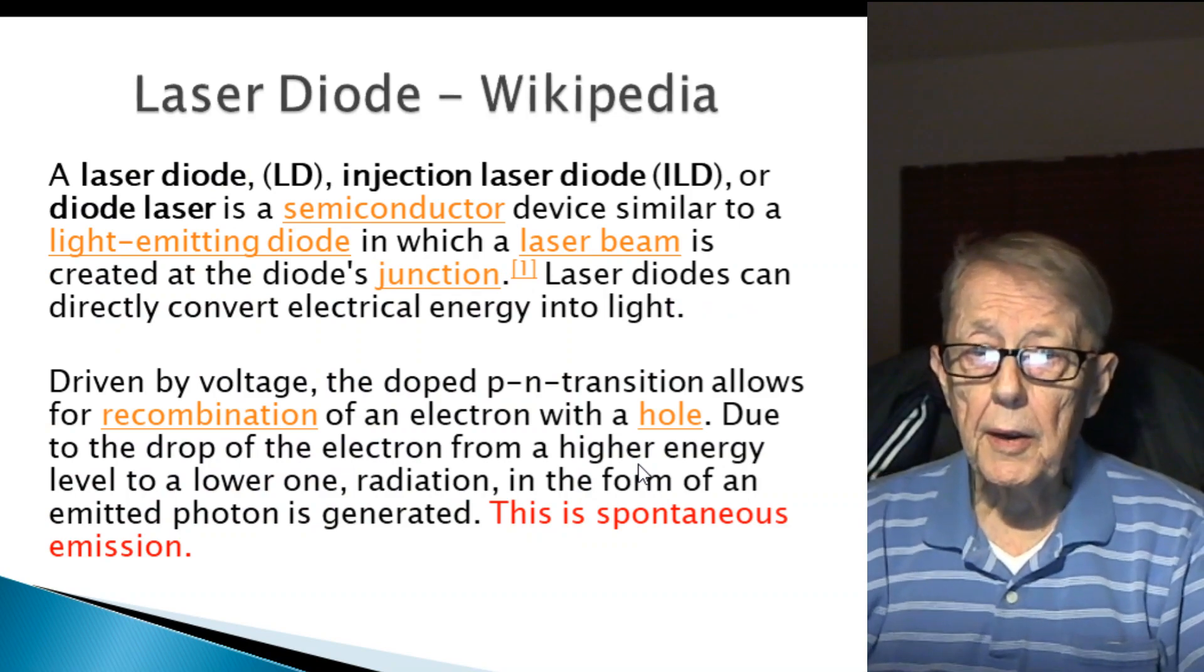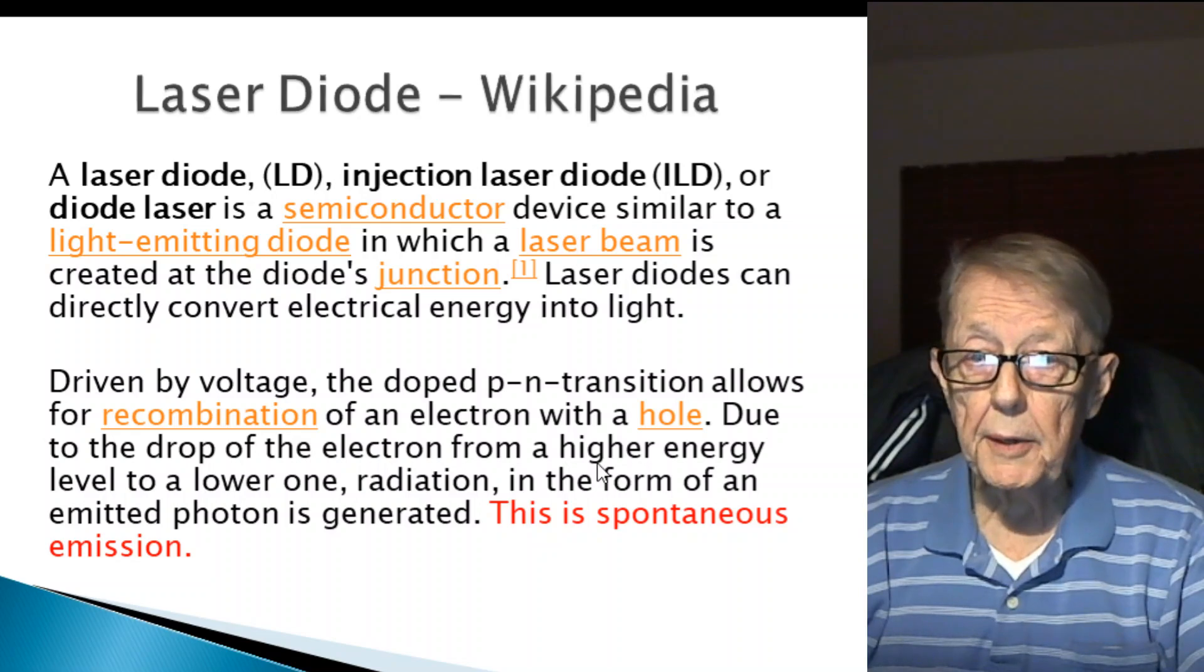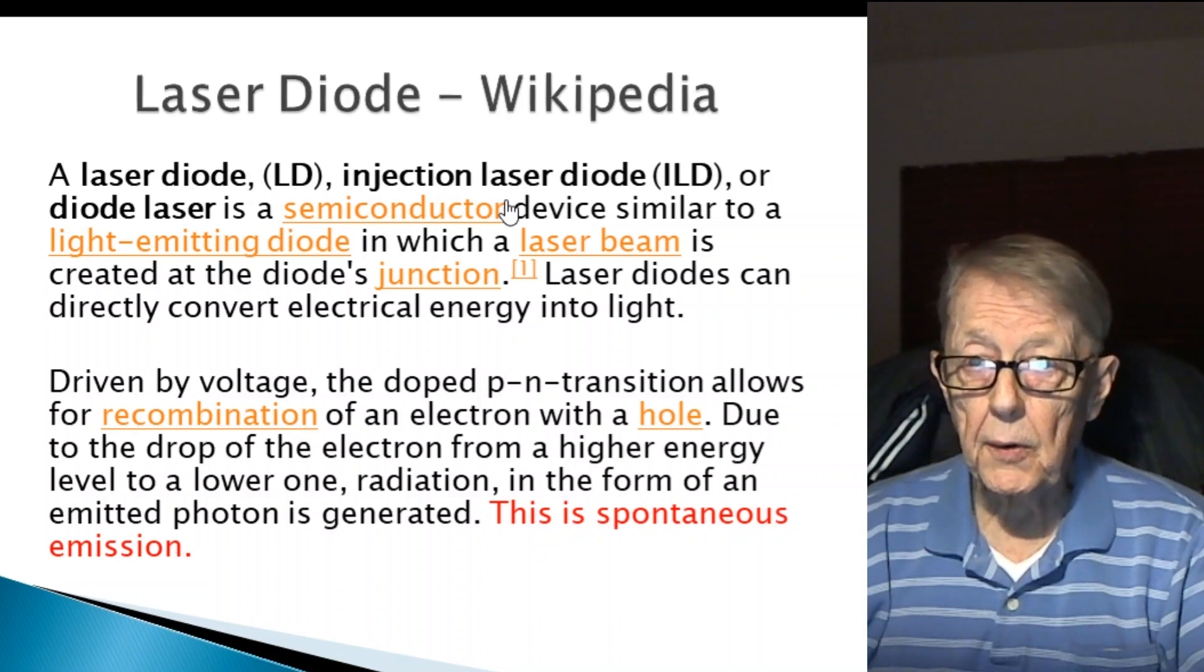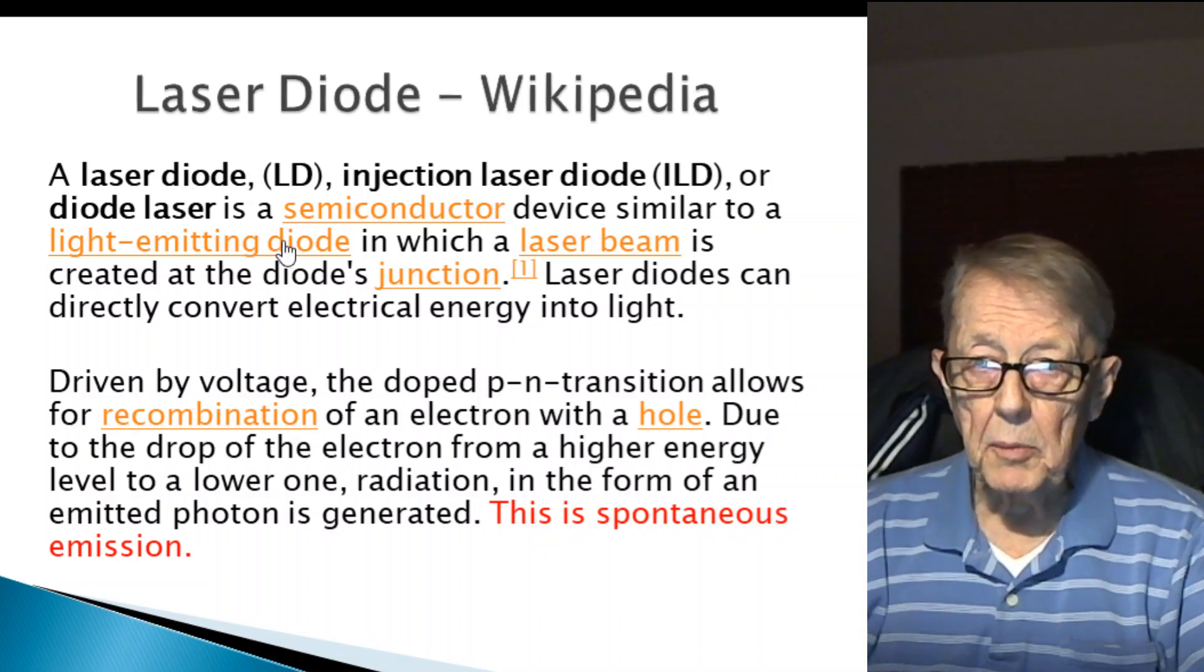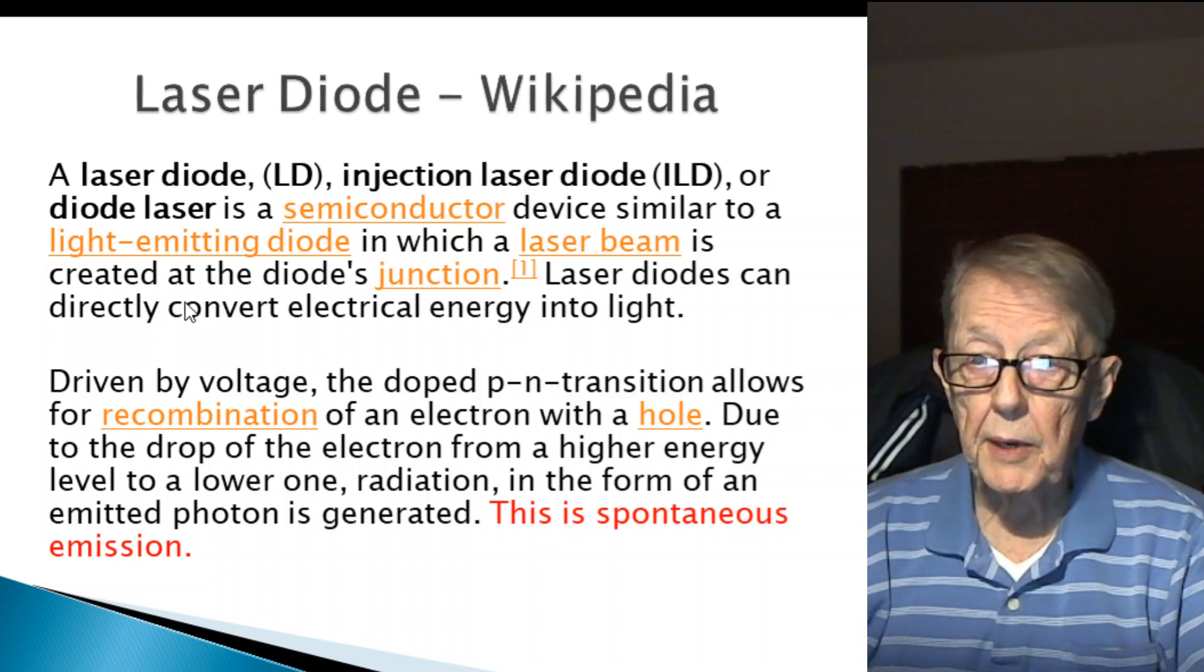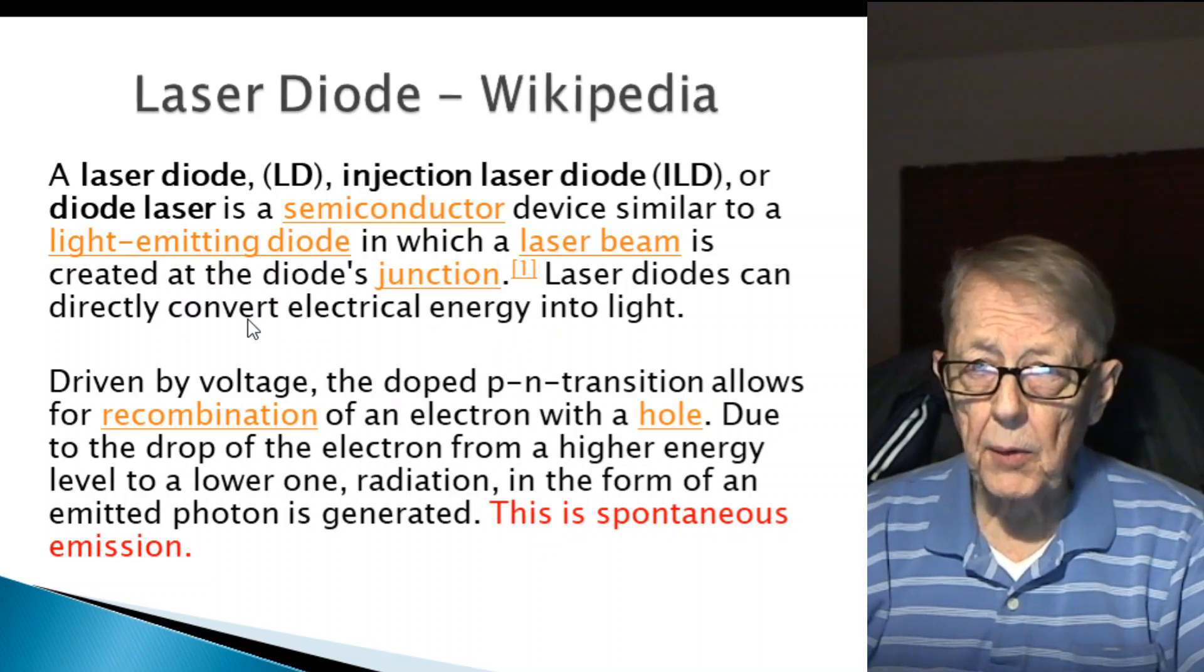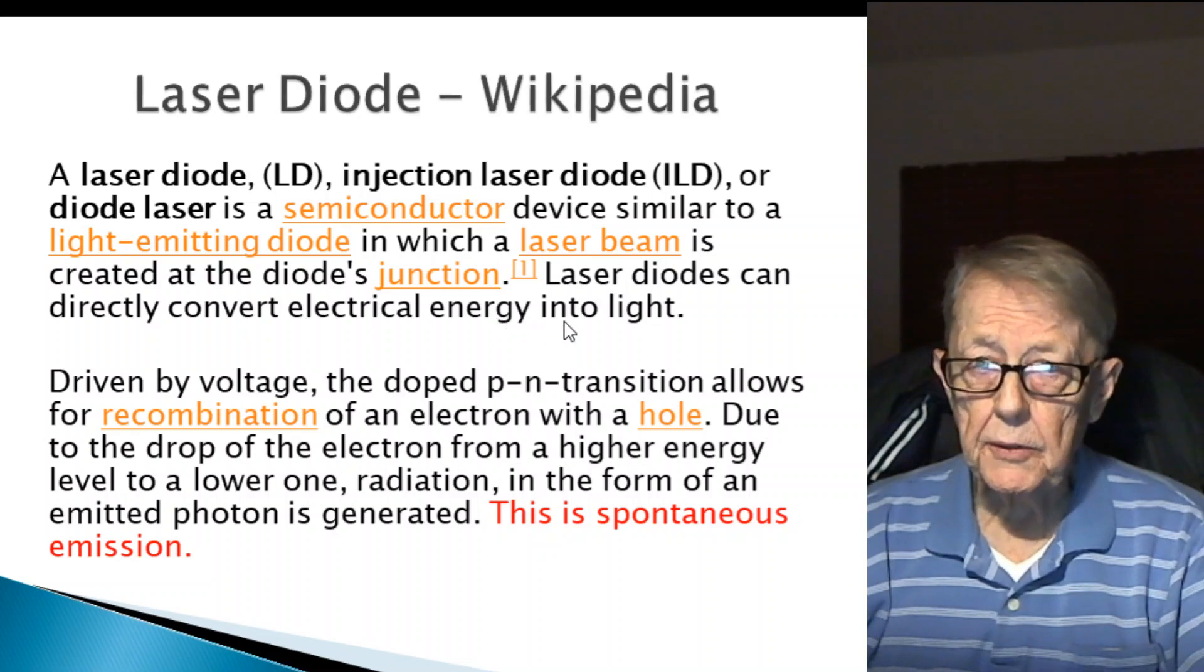The laser diode as defined by Wikipedia: a laser diode or injection laser diode or diode laser, all of them are a semiconductor device similar to a light emitting diode in which a laser beam is created in the diode's junction. The laser diodes can directly convert electrical energy into light.